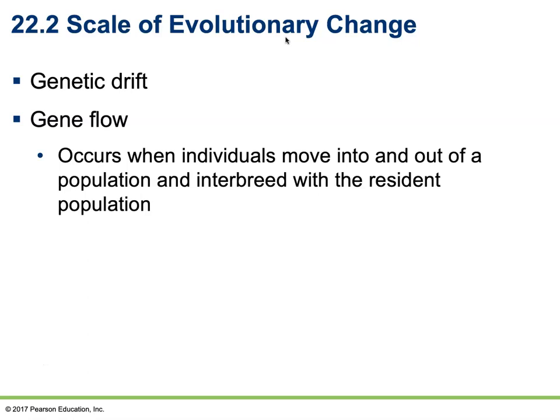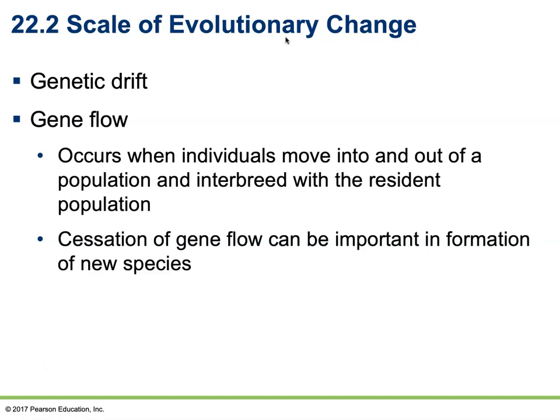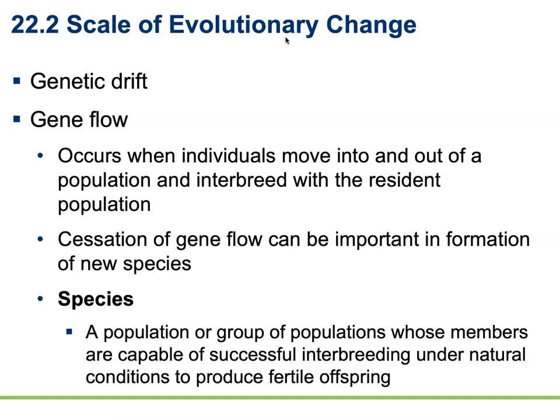Gene flow occurs when individuals move into and out of a population and interbreed with the resident population. If these new individuals successfully interbreed with the local population, new genetic information is introduced, but we don't have a new species — genes are simply flowing in and out. It's not until that population is cut off from that genetic river that genes become isolated and speciation begins. As the population becomes increasingly distinct and loses the ability to successfully reproduce with other members, a new species develops. A species is a population whose members can successfully interbreed under natural conditions to produce fertile offspring.